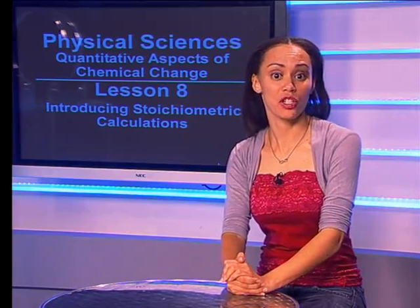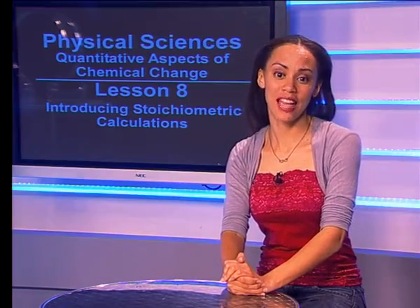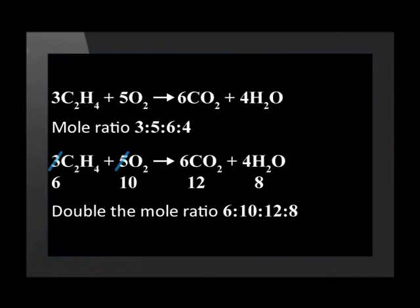For example, if we double the ethene to 6 moles, then the oxygen required in the reaction also doubles to 10 moles. The amount of product formed would also change to 12 moles of carbon dioxide and 8 moles of water are produced.